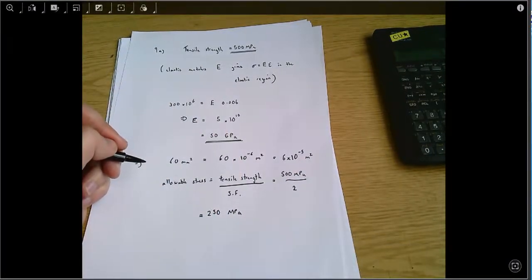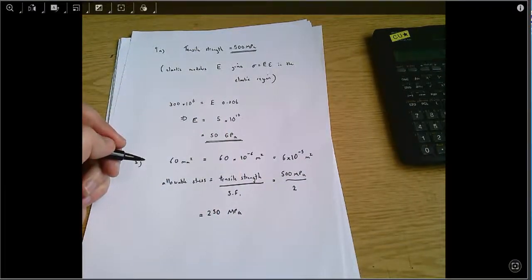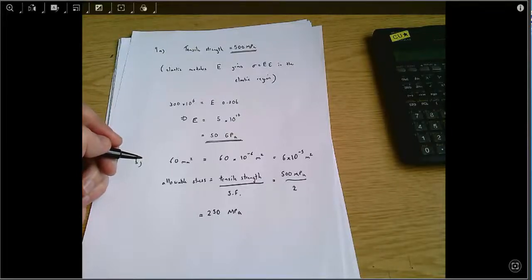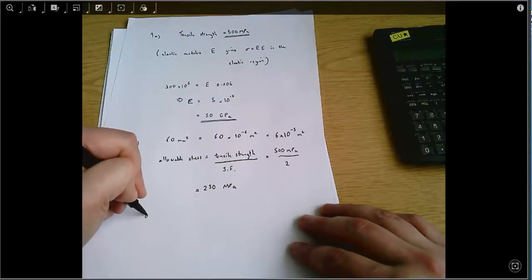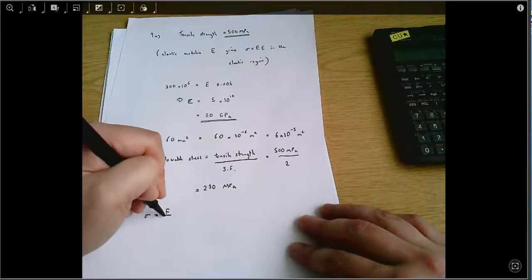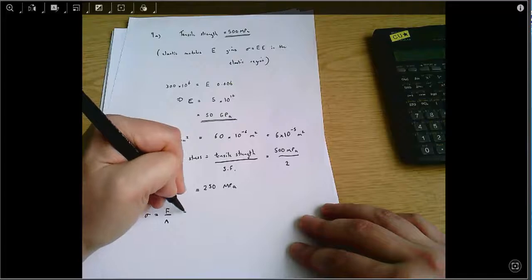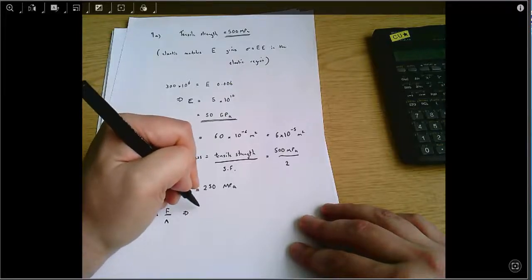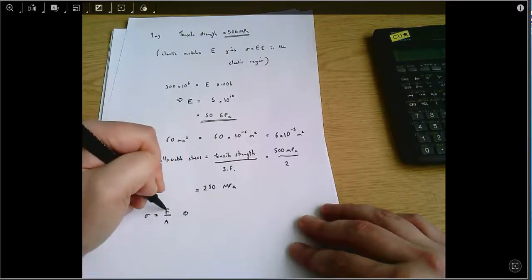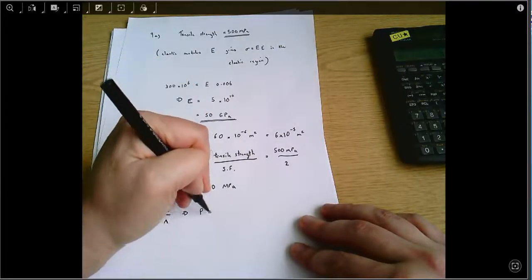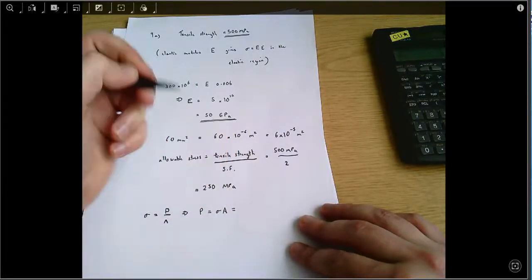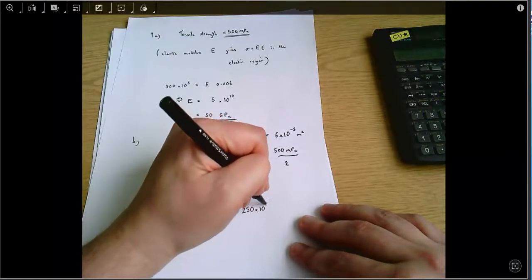250 megapascals is our target. We also know that stress is force divided by area, which in this case means that the force—well, we're told the force is P, so I'll use P. P equals sigma A equals 250 times 10 to the 6, that's this number.